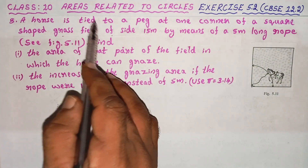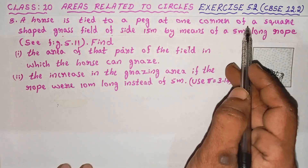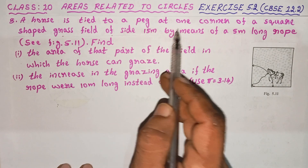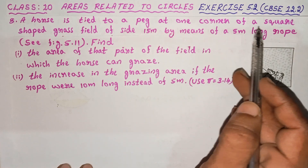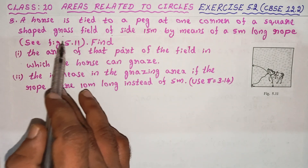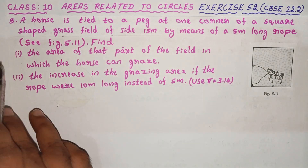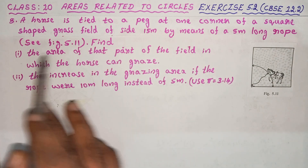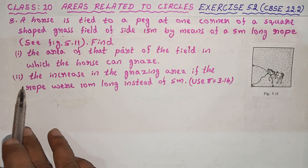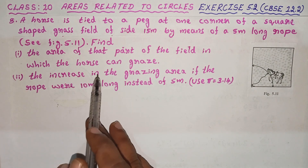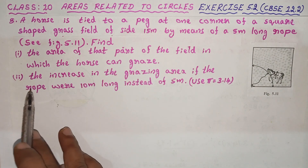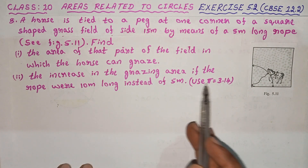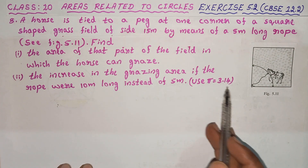A horse is tied to a peg at one corner of a square-shaped grass bed of side 15 meters, by means of a 5-meter long rope. See figure 5.11. Find: first, the area of that part of the field in which the horse can graze. Second, the increase in the grazing area if the rope were 10 meters long instead of 5 meters. Use pi equal to 3.14.